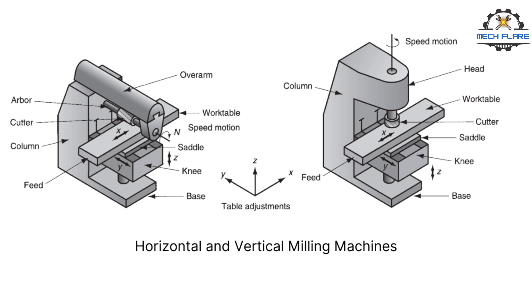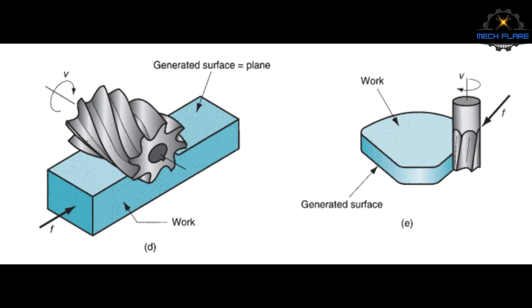The geometric form created by milling is a plain surface. Other work geometries can be created either by means of the cutter path or the cutter shape. Owing to the variety of shapes possible and its high production rates, milling is one of the most versatile and widely used machining operations.